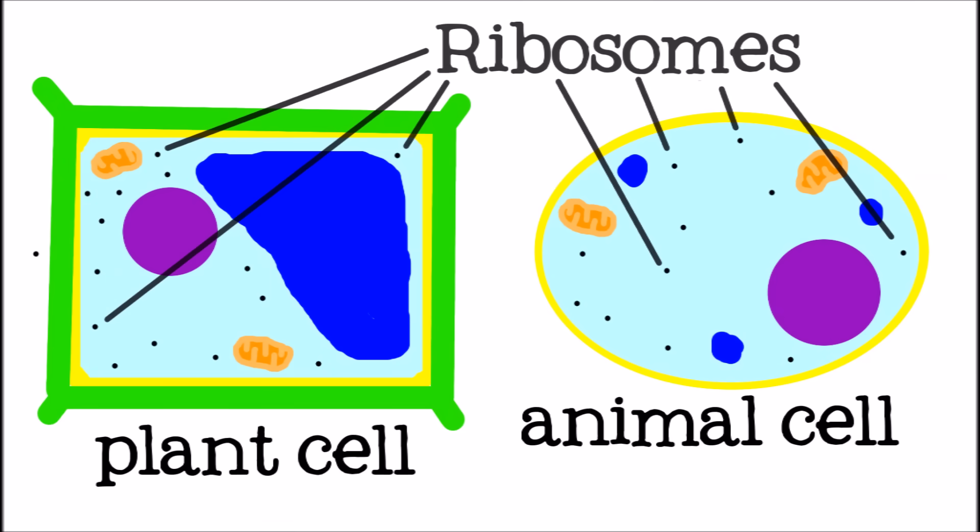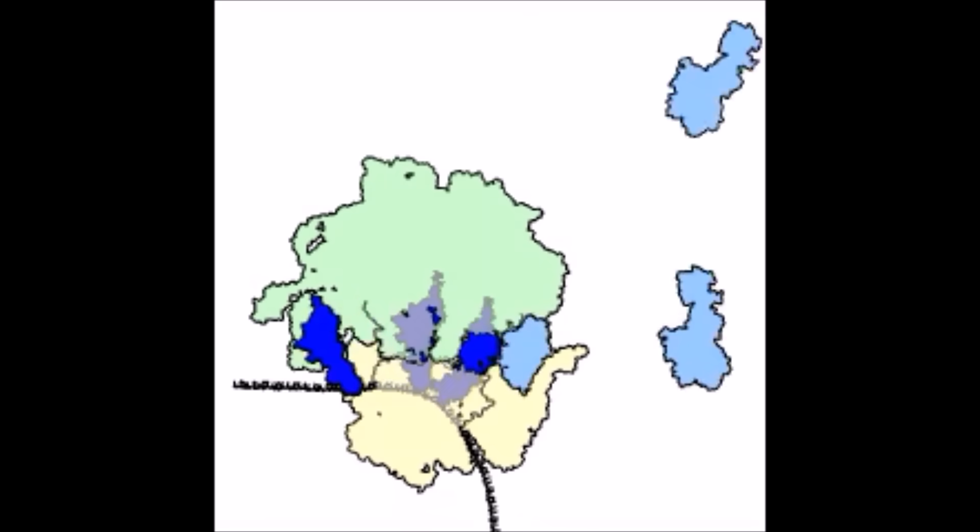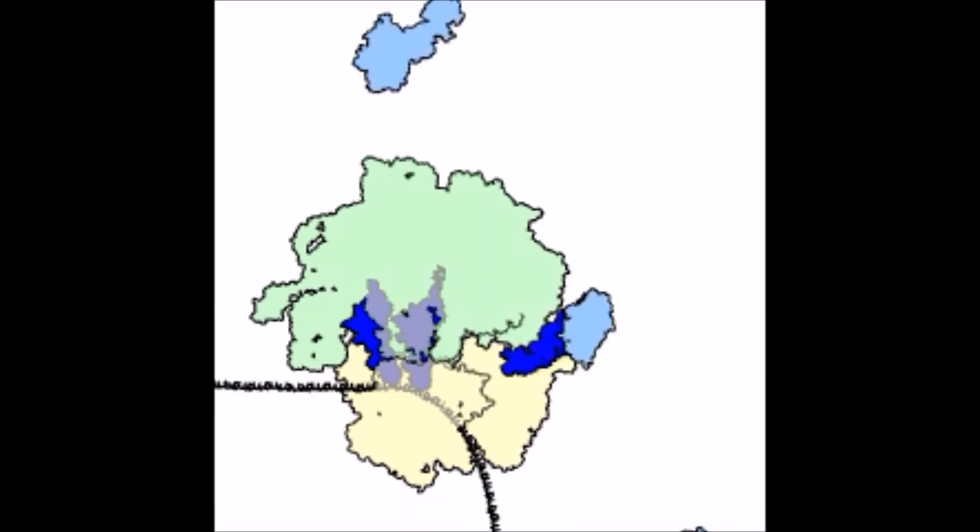Ribosomes are shaped like tiny balls but work like tiny factories. They make things that the cell needs, like proteins. The cell can use proteins made by the ribosomes to build new structures, repair damage, and direct chemical reactions.